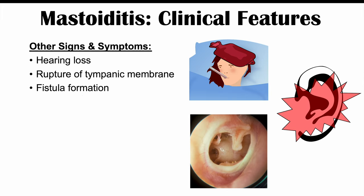Besides treatment, preventative mechanisms can reduce the risk of mastoiditis. Pneumococcal vaccination is one such measure — since Streptococcus pneumoniae is a common bacterial cause of acute otitis media, vaccination against it can reduce the risk of acute otitis media and subsequently the risk of mastoiditis as a complication. If you found this lesson helpful, please like and subscribe for more lessons like this one.